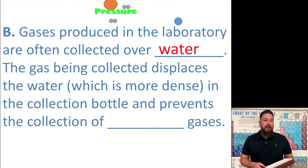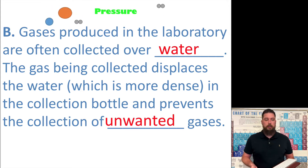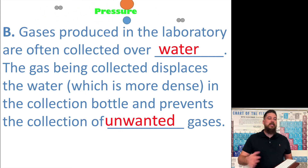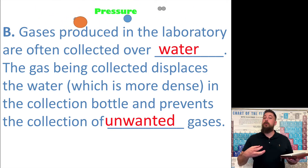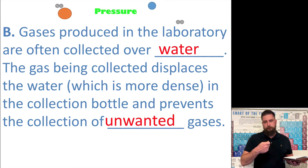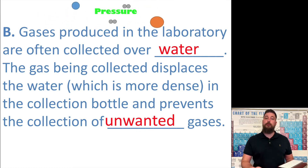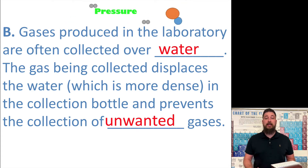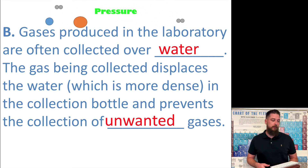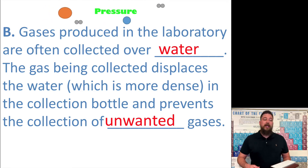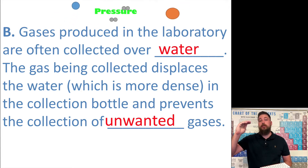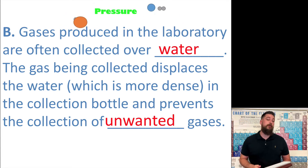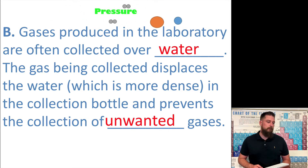Gases produced in the laboratory are often collected over water. The gas being collected will displace that water. A lot of times when a chemical reaction occurs and a gas is produced and we want to collect that gas, we'll collect it through water displacement. What happens is the water will be displaced within a container because it's being filled up with a certain gas, and it prevents the gas from escaping.